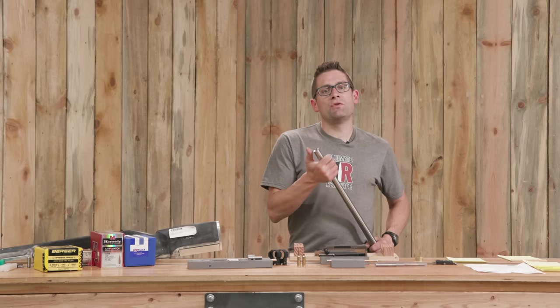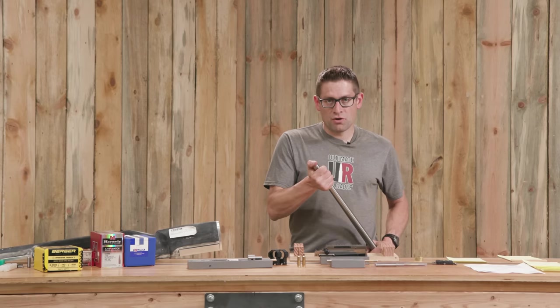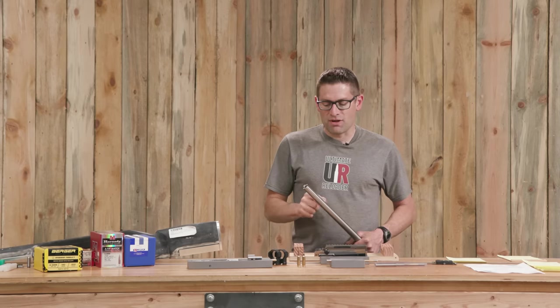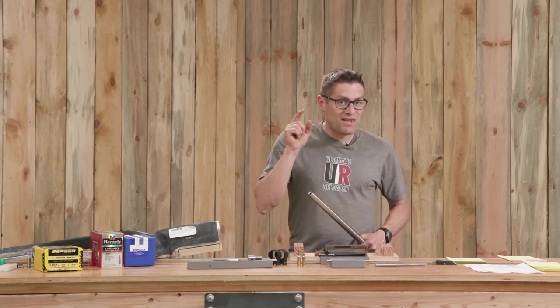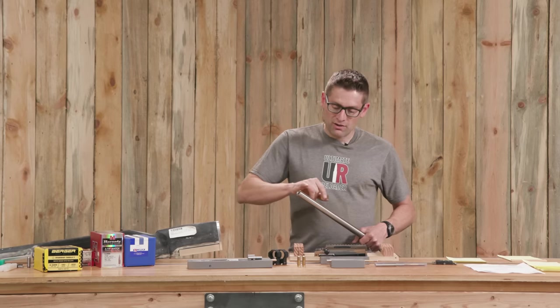Then it was time to go to the muzzle end. I'm starting here with an eleven degree target crown. Again, I'm using the TrueBore alignment system. It uses a six-jaw chuck. So this time I was very careful to calculate the barrel taper.